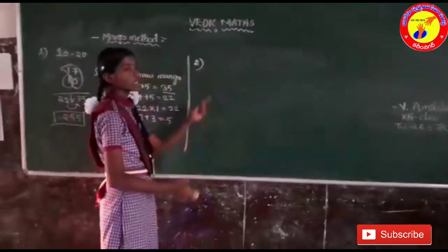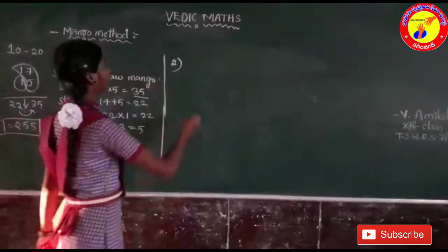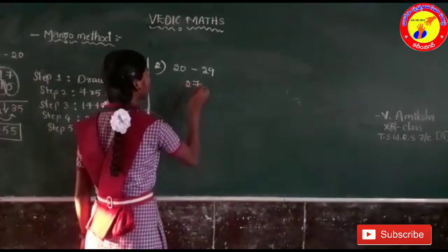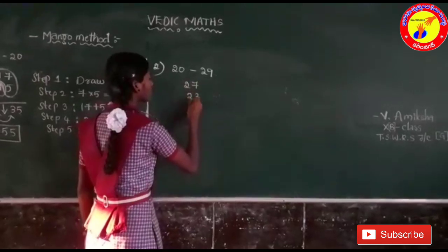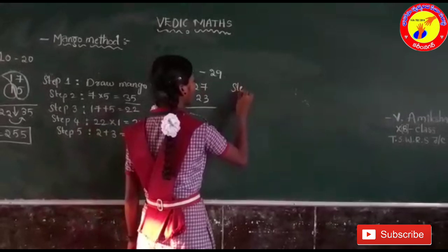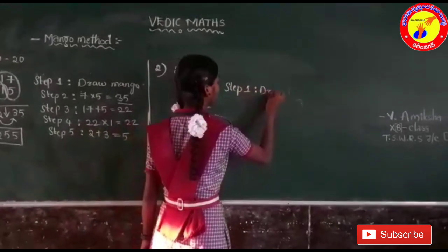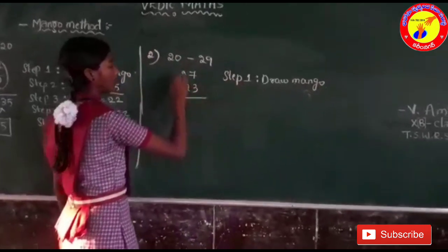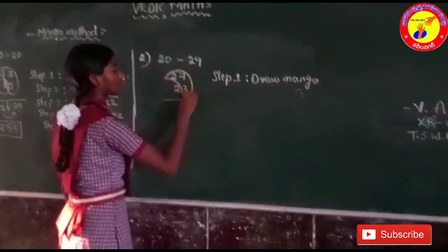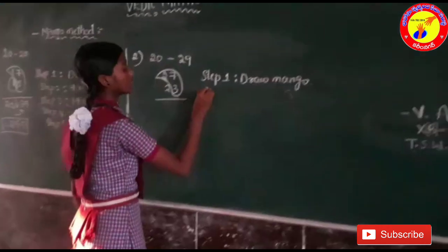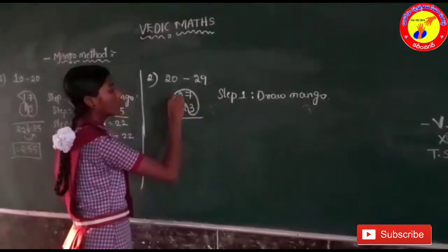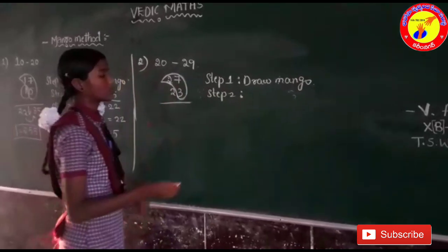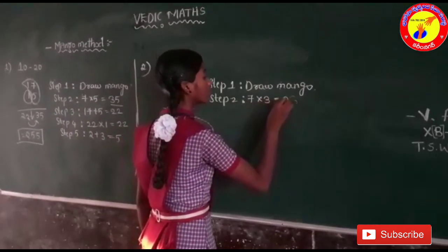Coming to the second example, I will take numbers from 20 to 29. I want to take 27 and 23. In step 1, we have to draw a mango. In step 2, we have to multiply 7 into 3, which are in the ones place. 7 into 3 is equal to 21.